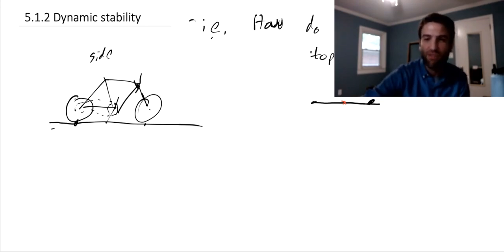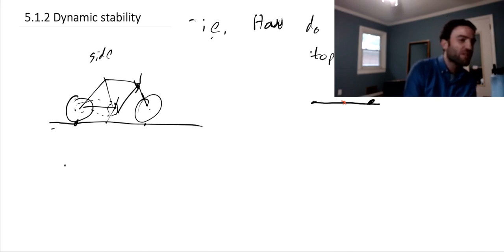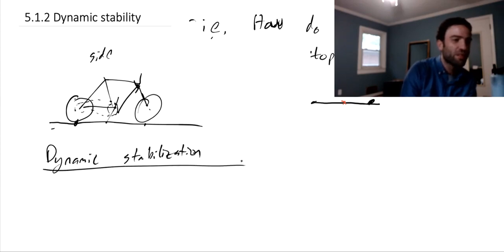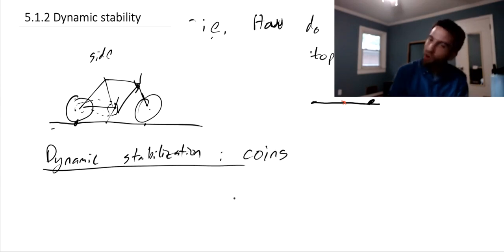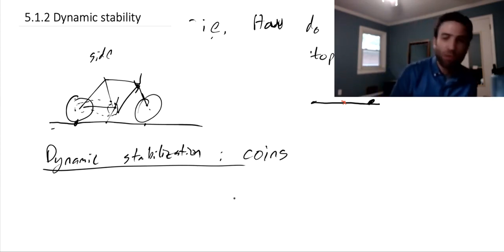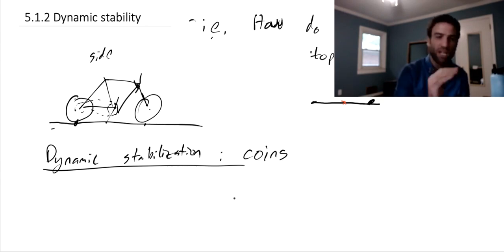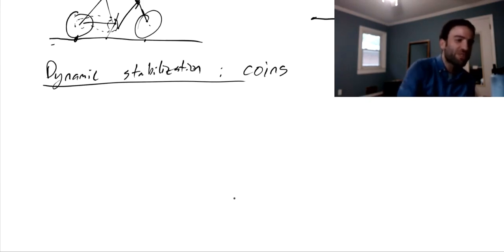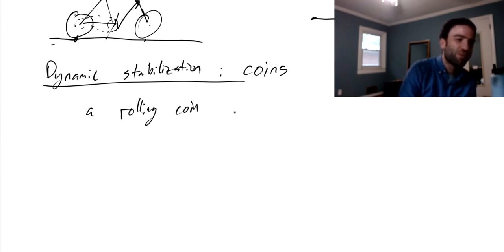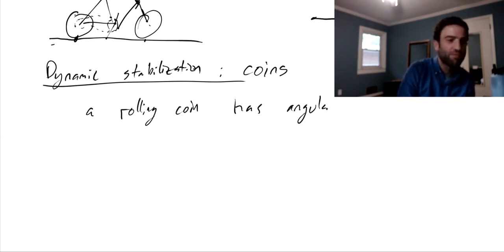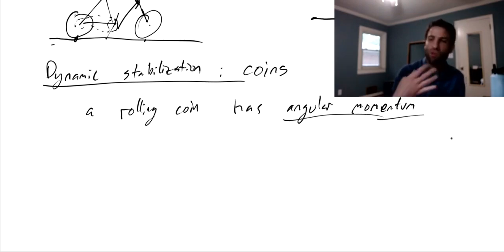There are a few different things we have to consider when we want to understand this - dynamic stabilization. Let's first talk about coins. A rolling coin, just a single wheel rolling, has a certain amount of dynamic stability. A bicycle uses both the mechanism I'm going to talk about for coins and something else. So the first thing is that a rolling coin has angular momentum. That means there's a sense in which the coin wants to continue spinning at the same angular speed about the same axis.